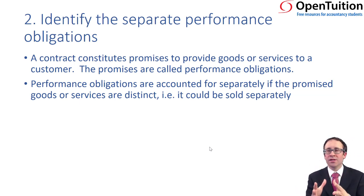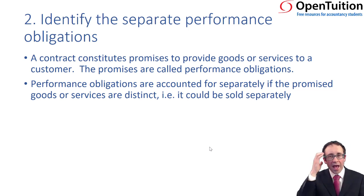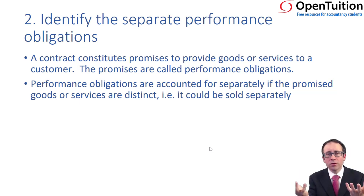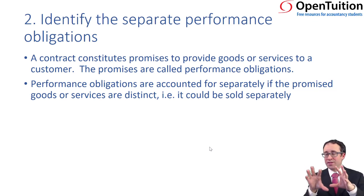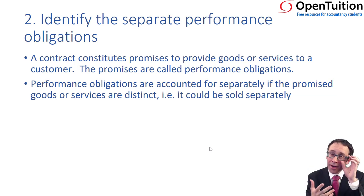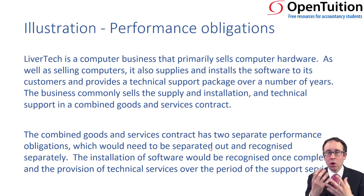That's commonly happened in the world of technology. You buy the product — say your television — but within the price is also some form of free support in case you can't use that product. So what we're going to do is separate those out. We can separate them out if they could be sold separately and if they are separately identifiable. The sale of the computer could be split out from the support because the support could be offered to anybody who's bought a computer from anywhere else. So you could have a separate price for the television and a separate price for the support, but you pay a combined price — and usually that combined price is cheaper.